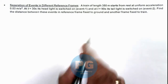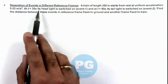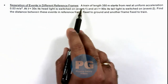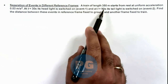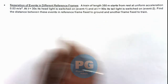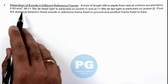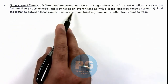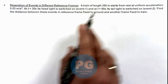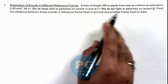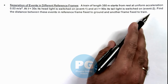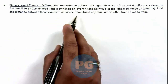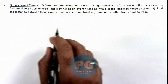In this illustration we'll discuss the separation of events in different reference frames. We are given that a train of length 350 meters starts from rest at uniform acceleration 0.03 meter per second squared. At t equal to zero its headlight is switched on, which is taken as Event 1, and at t equal to 90 seconds its tail light is switched on, which is Event 2. We are required to find the distance between these events in a reference frame fixed to the ground and another frame fixed to the train.